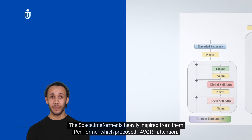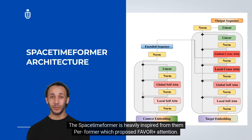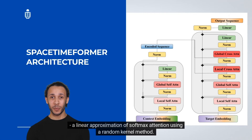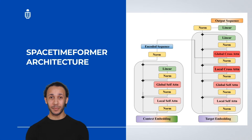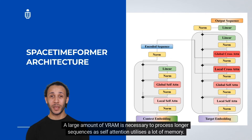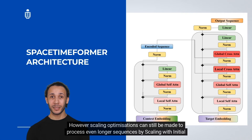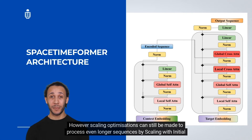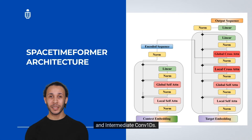The Spacetime Former is heavily inspired by the Performer, which proposes FAVOR+ attention — a linear approximation of softmax attention using a random kernel method. All experiments were conducted on 2x NVIDIA A6000 accelerators with 40 GB VRAM each. A large amount of VRAM is necessary to process longer sequences since self-attention is memory-intensive. Scaling optimizations can still be made by using initial and intermediate Conv1D layers.